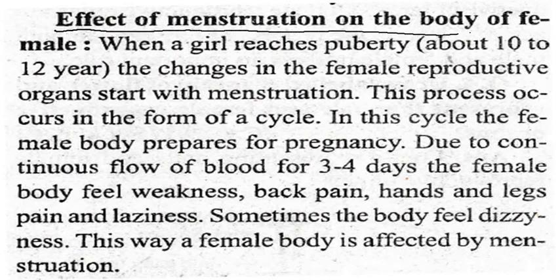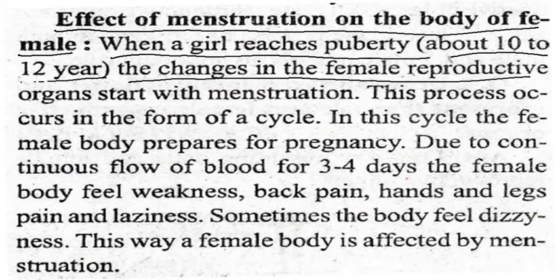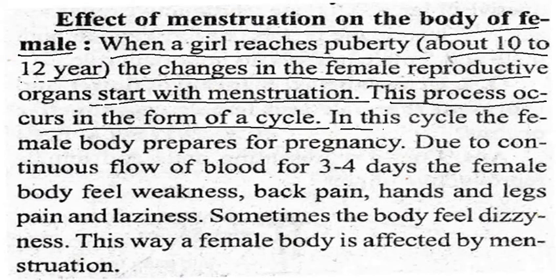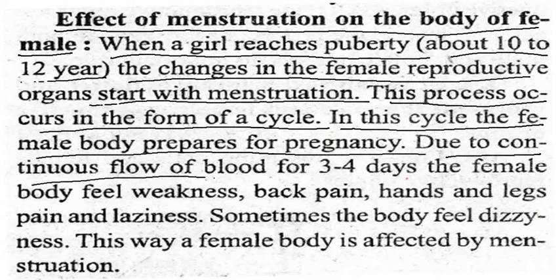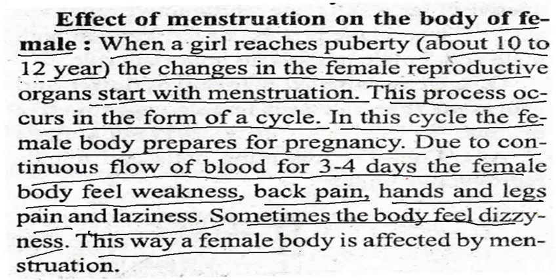Effect of menstruation on the body of the female: when a girl reaches puberty at about ten to twelve years, changes in the female reproductive organs start with menstruation. This process occurs in the form of a cycle in which the female body prepares for pregnancy. Due to continuous flow of blood for three to four days, the female body feels weakness, back pain, hand and leg pain, and laziness. Sometimes the body feels dizziness also.